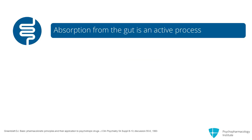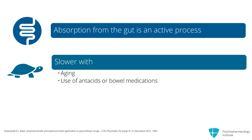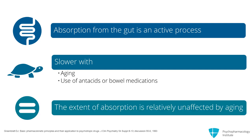Absorption from the gut is an active process that involves the drug metabolizing enzyme CYP3A4, as well as P-glycoprotein, both expressed in cells lining the gut. The rate of absorption can be slower with aging and with the use of antacids or bowel medications common in very elderly patients that contain calcium or aluminum. But because the extent of absorption is relatively unaffected by aging, at least in the absence of disease, you don't hear much about this phase in geriatric psychopharmacology.